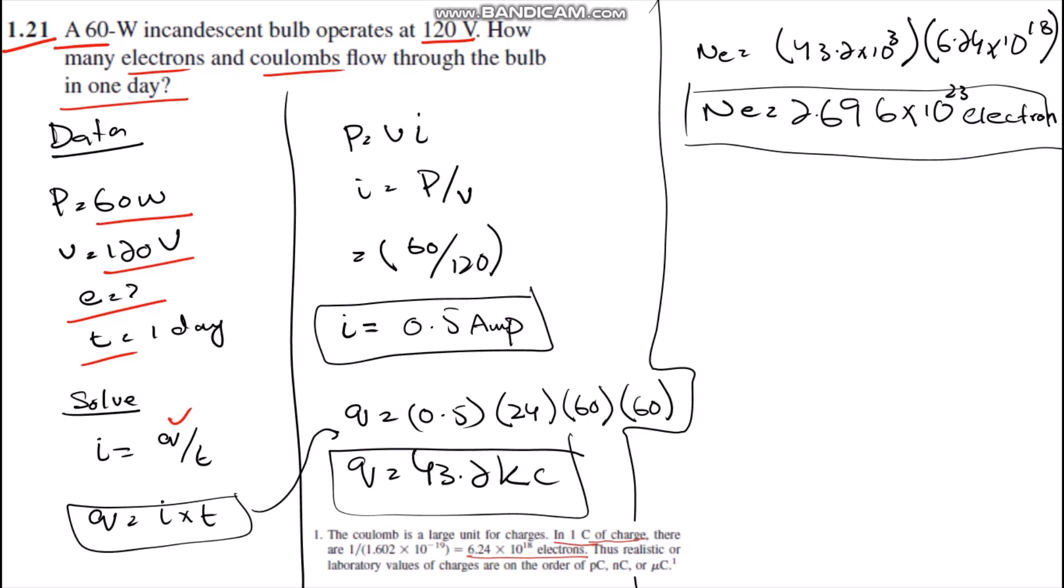From this, first of all we have to find current from the given data. We have the equation P equals VI, which is the equation of power.